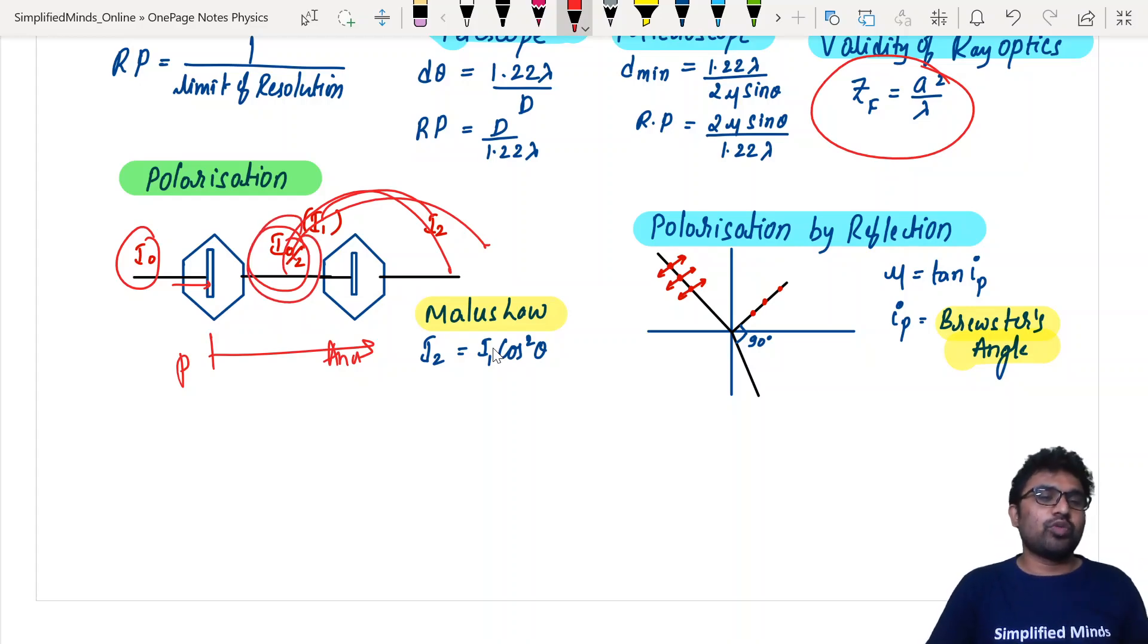What is coming out of the analyzer depends upon the angle between these two things. What angle you have kept, that angle determines it. It's very important to know that. By default, what you get from the polarizer is I0 by 2. Once it goes through the polarizer, you're getting I0 by 2. And what comes out depends upon the angle between the polarizer and analyzer - that's Malus law. Also, you should know polarization by reflection, that's given by Brewster's angle: mu equals tan I.